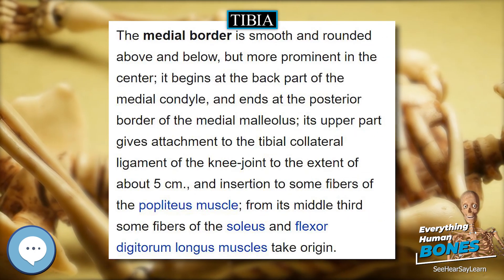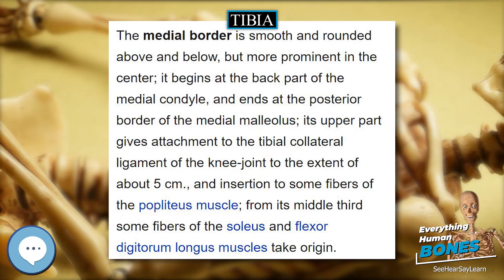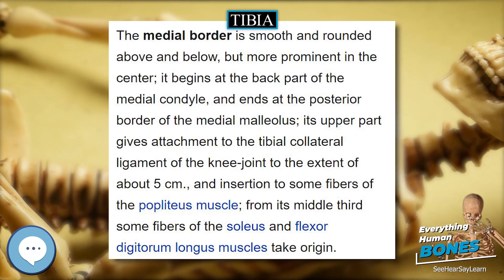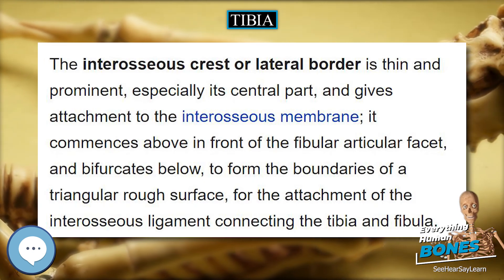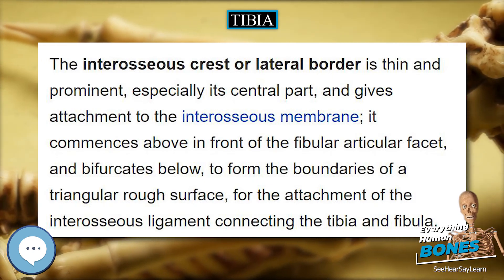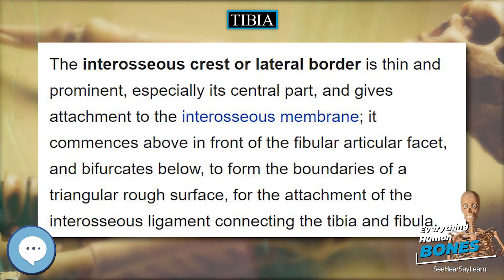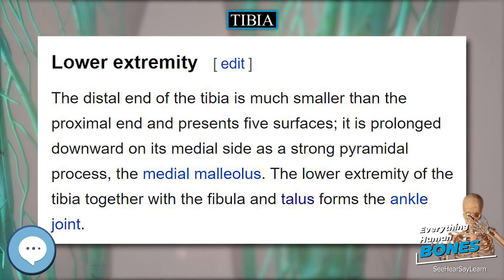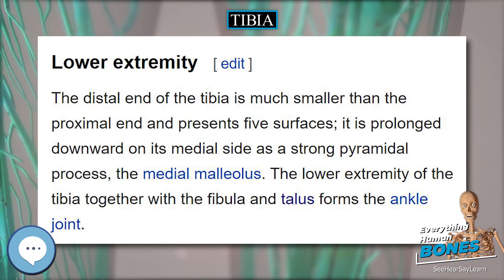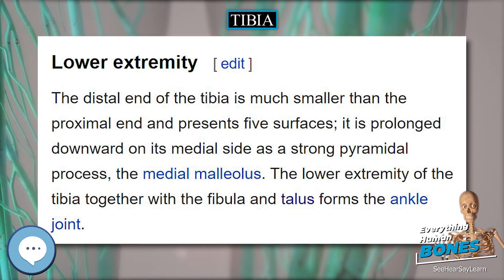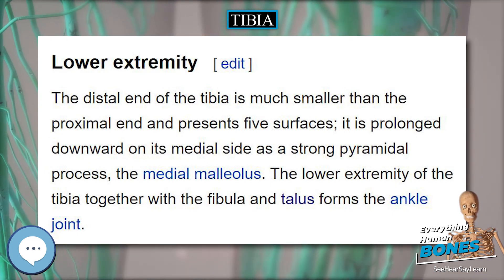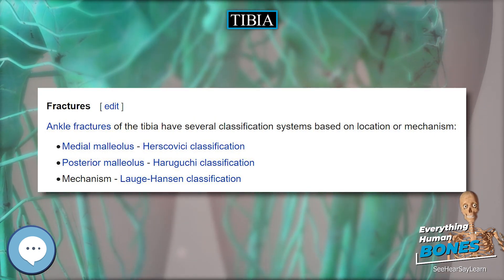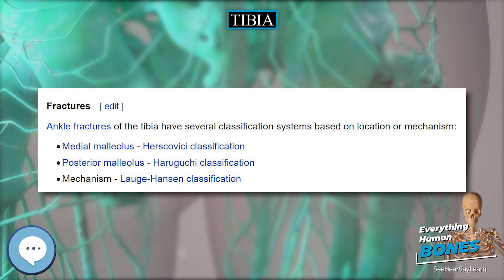Clinical significance. Fractures of the tibia can be divided into those that only involve the tibia — bumper fracture, Segond fracture, Gosselin fracture, toddler's fracture — and those including both the tibia and fibula: trimalleolar fracture, bimalleolar fracture, and Pott's fracture.